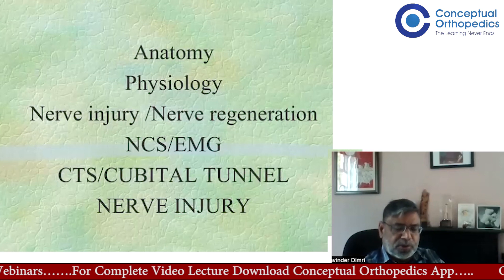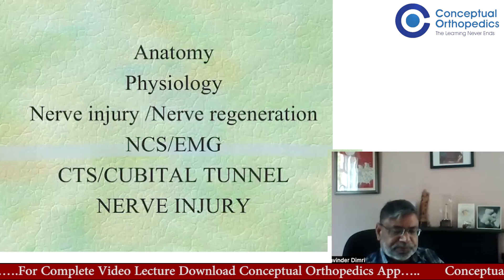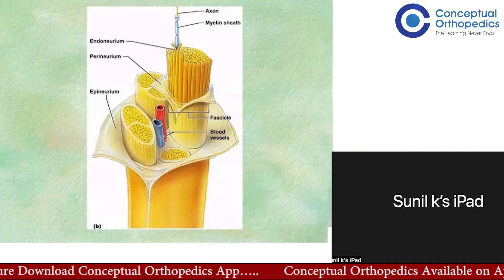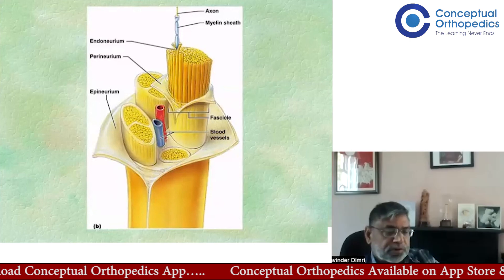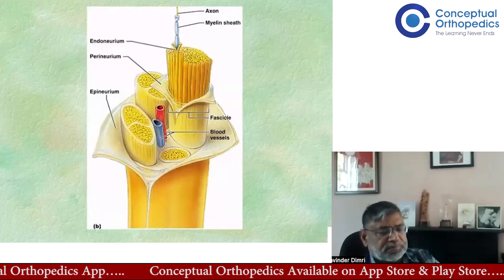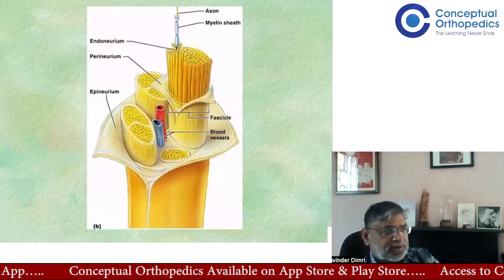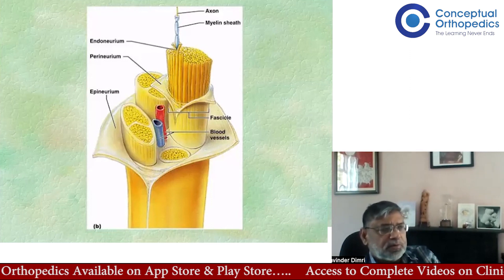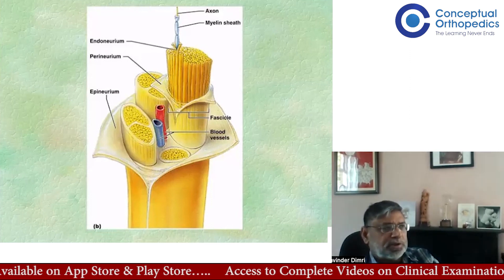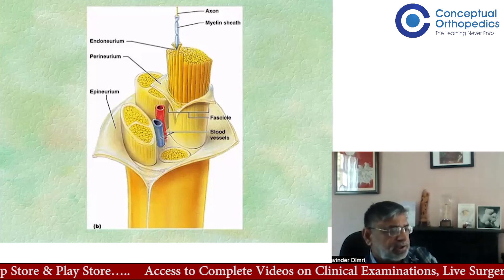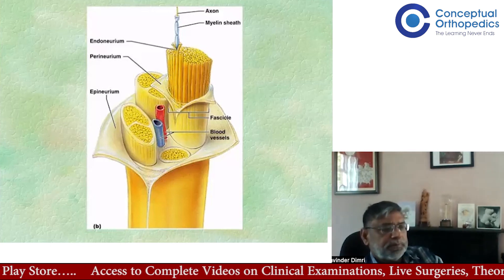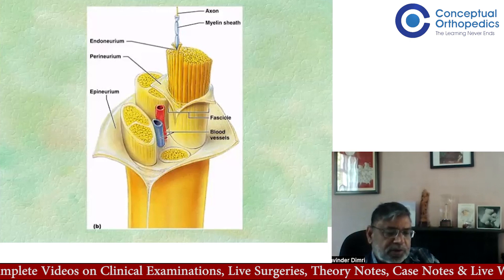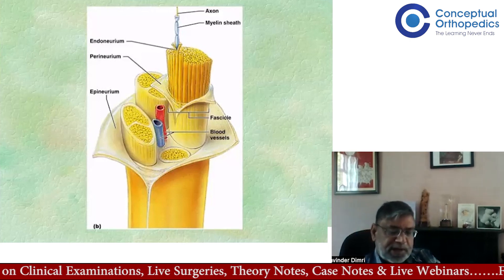Starting with the anatomy of the nerve: although a neuron has a cell body, axon, and dendrites, when we say 'nerve' we're talking about a bundle of axons. Most cell bodies are either in the spinal cord or dorsal root ganglion. Each axon is surrounded by a myelin sheath if it is myelinated — not every axon is myelinated, but most peripheral axons will be.